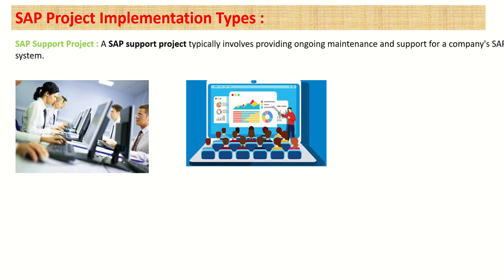Those are the different project types in SAP. Whenever we join any project, they may directly ask whether you have done end-to-end implementation, or inform you that they only have support projects and ask if you're interested. We should know the difference between implementation, rollout, and support projects. With this, we are done with the session on SAP project implementation types. Thank you.